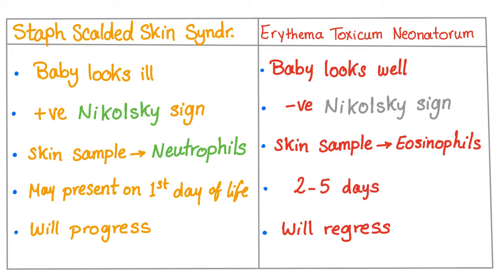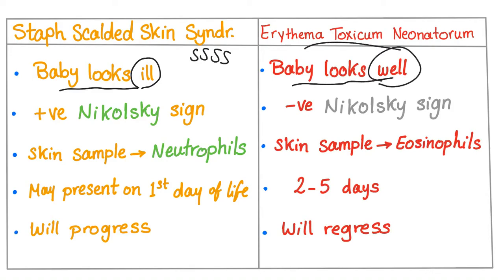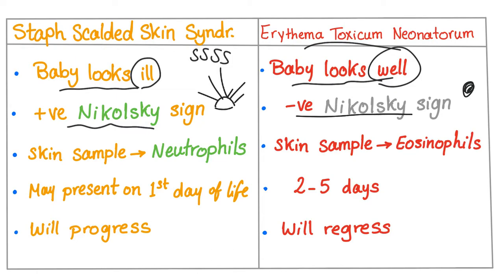In Staphylococcal Scalded Skin Syndrome (SSSS), the baby looks ill. On the other hand, with Erythema Toxicum Neonatorum, the baby looks well. SSSS has a positive Nikolsky sign, meaning the bullae or blisters will burst. In contrast, Erythema Toxicum Neonatorum has a negative Nikolsky sign — the skin rash stays intact and will not rupture.